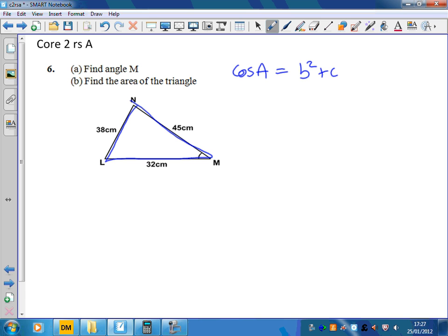b squared plus c squared take away a squared divided by 2bc. So on my triangle I've got M, so that's going to be A. The opposite side is little a, so I'm just going to label N as b.